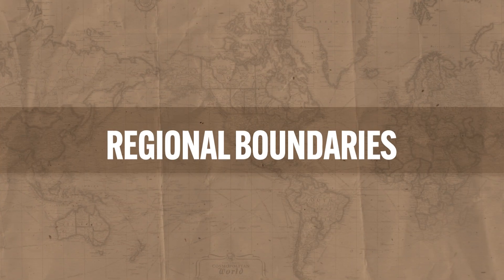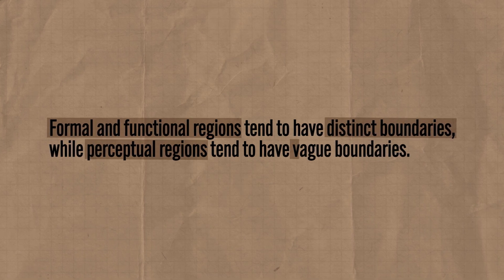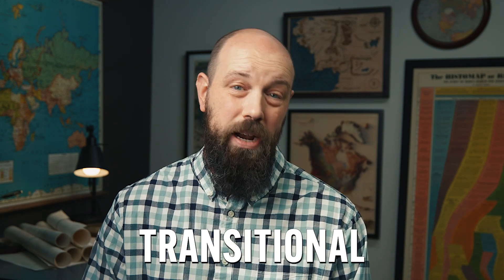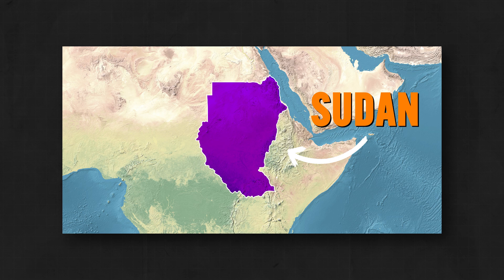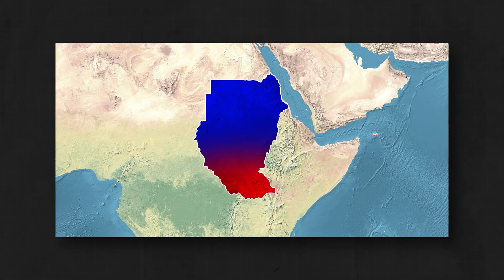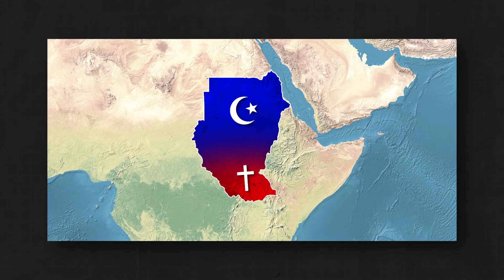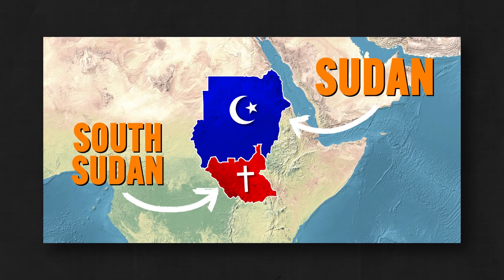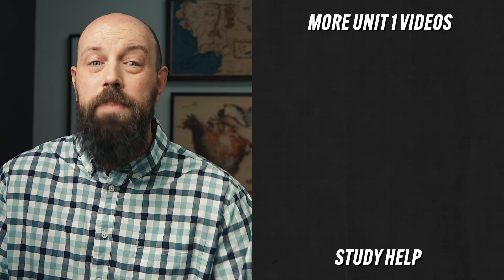Now let's finish up by talking about the boundaries of regions. Formal and functional regions tend to have distinct boundaries, while perceptual regions tend to have vague boundaries. But even with formal and functional regions, boundaries are often transitional — meaning there isn't a hard line separating them — and these boundaries are sometimes the subject of disputes, which we call contested boundaries. For example, prior to 2011, the African country of Sudan was one country serving as a functional region, but it also contained two distinct formal regions based on religion: the north was primarily Muslim while the south was primarily Christian. In 2011 turmoil erupted and Sudan split into Sudan and South Sudan, each now serving as distinct functional and formal regions.